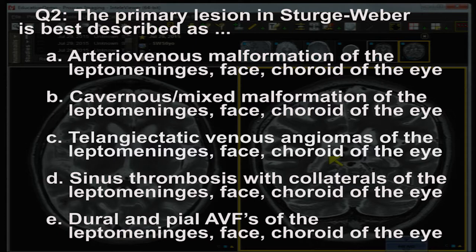...A) arteriovenous malformation of the leptomeninges, face, choroid of the eye; B) cavernous mixed malformation of the leptomeninges, face, choroid of the eye; C) telangiectatic venous angiomas of the leptomeninges, face, choroid of the eye; D) sinus thrombosis with collaterals of the leptomeninges, face, choroid of the eye; E) dural-pial AVFs of the leptomeninges, face, choroid of the eye.